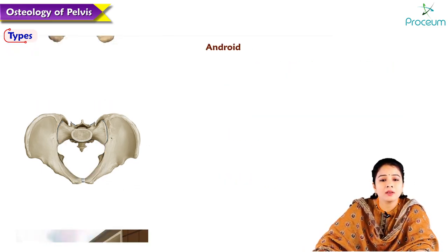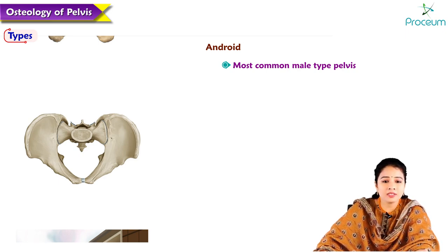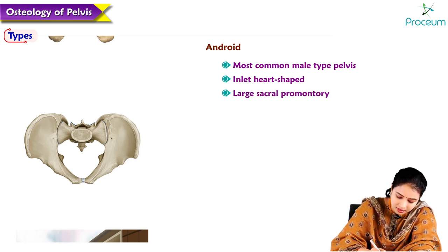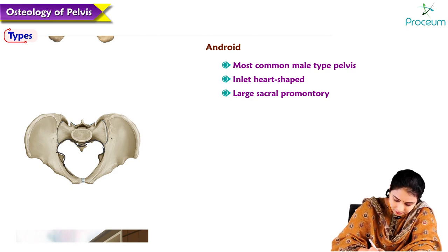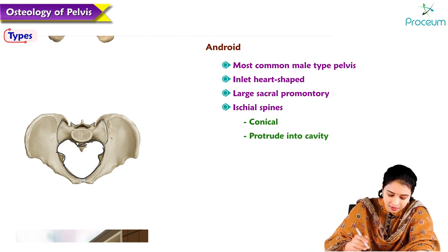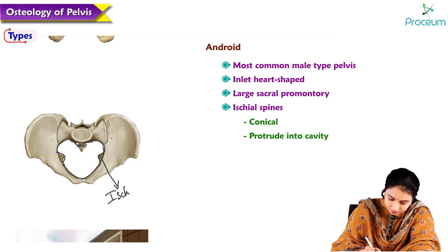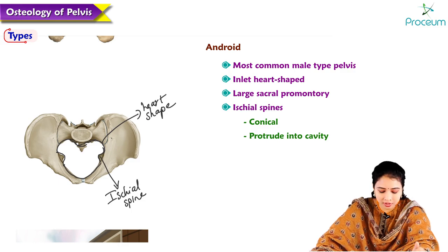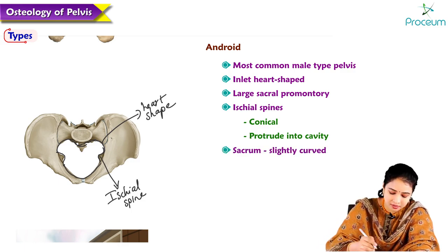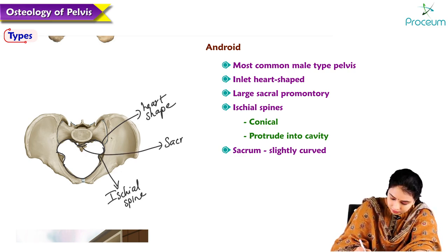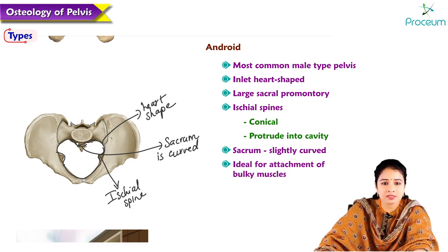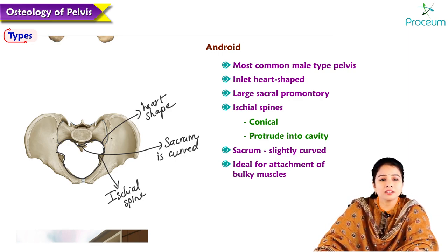The android pelvis is most common in males and is called the male-type pelvis. The inlet appears heart-shaped with a large sacral promontory, and the ischial spines are conical and protrude into the cavity. The sacrum is slightly curved inward, which is ideal for attachment of bulky muscles. The android pelvis can also be seen in females.